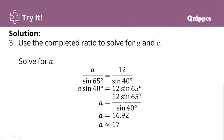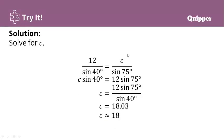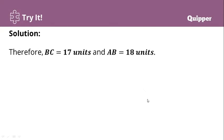And then the second one is we need to solve for c. We'll do the same process. 12 over sine 40 degrees is equal to c over sine 75 degrees. Then we get its cross product. We have c sine 40 degrees and 12 sine 75 degrees. To find c, we have 18.03 or approximately 18 units. Therefore, BC is 17 units and AB is 18 units.